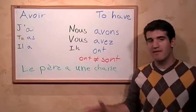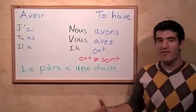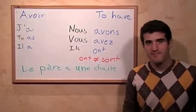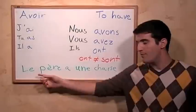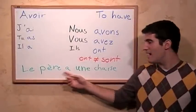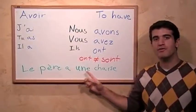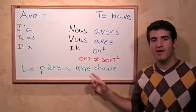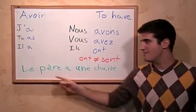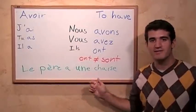So how would we say, for example, 'the father has a chair'? Le père — the father — a — has — une chaise — a chair. Le père a une chaise.